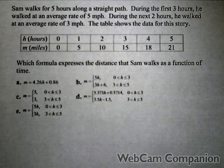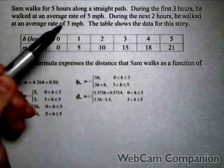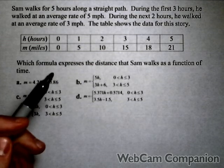So we want to write a formula that gives the distance that Sam walks as a function of time. Well, because his rate of change changes, we can't model this with a single linear function. We're gonna need two of them.